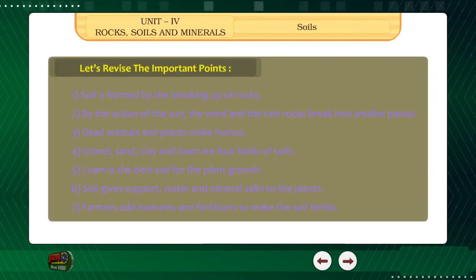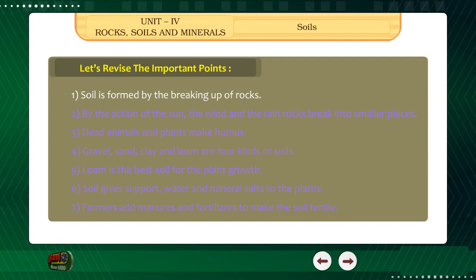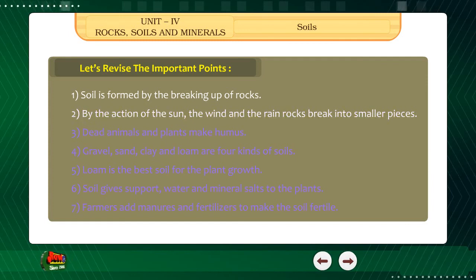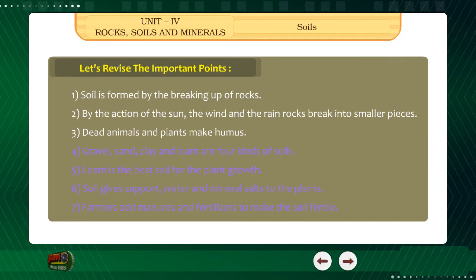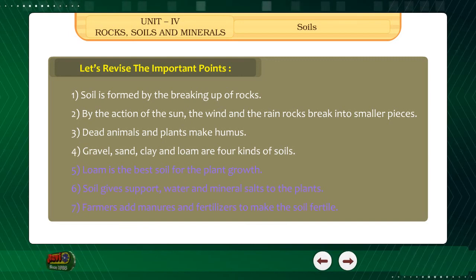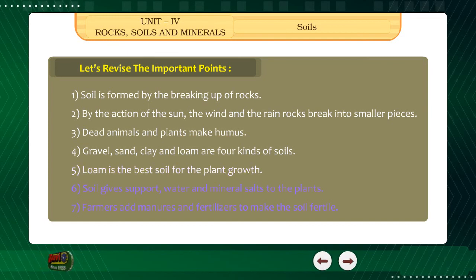Summary: 1. Soil is formed by the breaking up of rocks. 2. By the action of the sun, the wind and the rain, rocks break into smaller pieces. 3. Dead animals and plants make humus. 4. Gravel, sand, clay and loam are four kinds of soils. 5. Loam is the best soil for plant growth. 6. Soil gives support, water and mineral salts to the plants. 7. Farmers add manures and fertilizers to make the soil fertile.